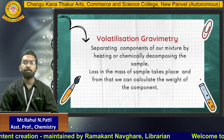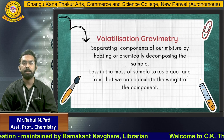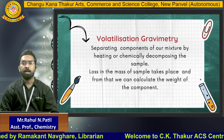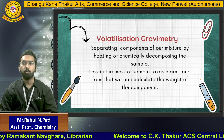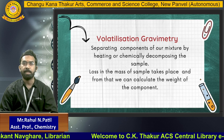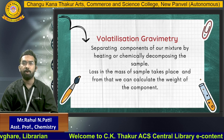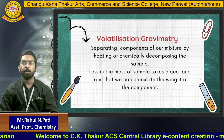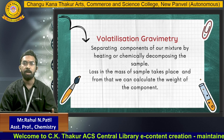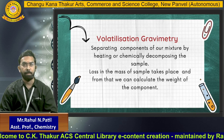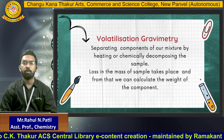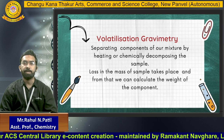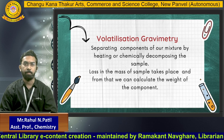The second type is volatilization gravimetry. As the name indicates, it involves volatilizing the compound — separating components of a mixture by heating or chemically decomposing the sample. A loss in the mass of the sample takes place, and from that we can calculate the weight of the component.